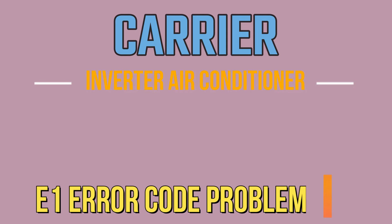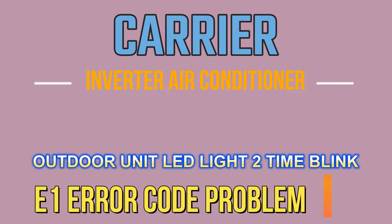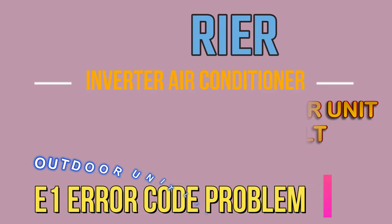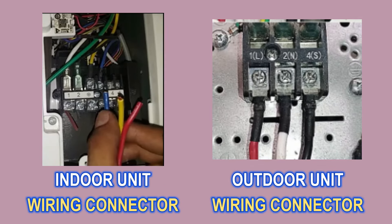In today's video, I am going to tell you that if you have a Carrier inverter AC and an E1 error is coming in that AC, and the LED light of the outdoor unit is blinking two times, then how can you fix this error. This error is an indoor unit and outdoor unit communication error, and it can occur due to four reasons.